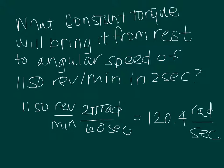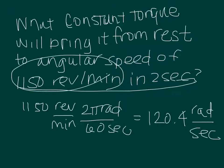So first, we have to take the 1,150 revolutions and turn that into angular speed. And we do that by doing 2 pi over 60 seconds, so we get 120.4 radians per second.